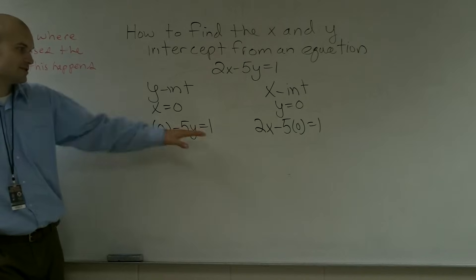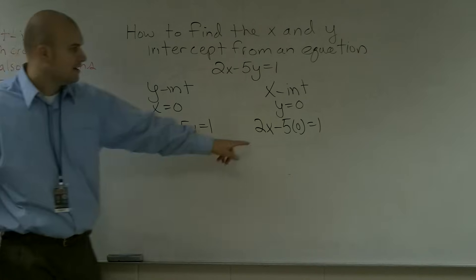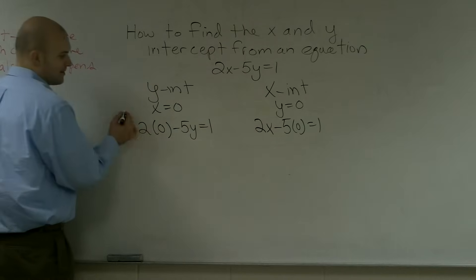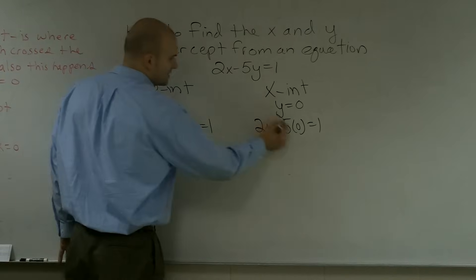Now, looking at these two equations, I'm going to solve for my variable y in this one, and for this problem, I'm going to solve for my variable x. I know that anything multiplied by 0 is 0, so I'm just going to cancel them out.